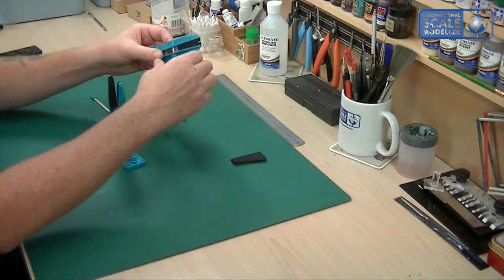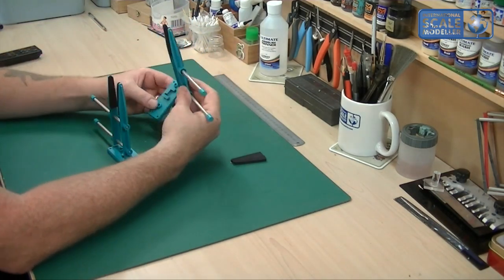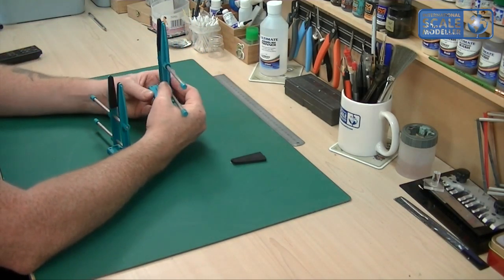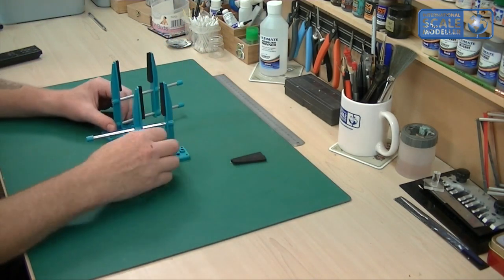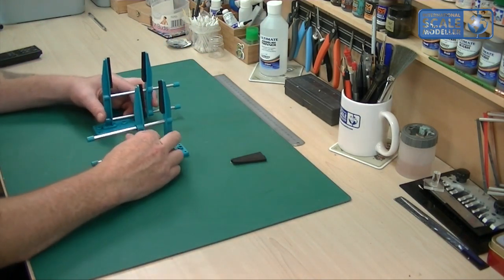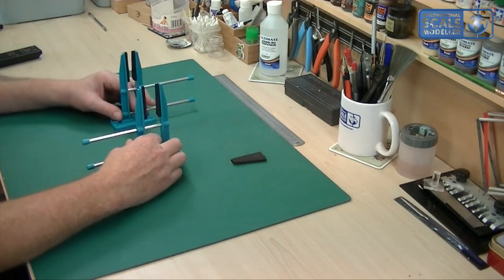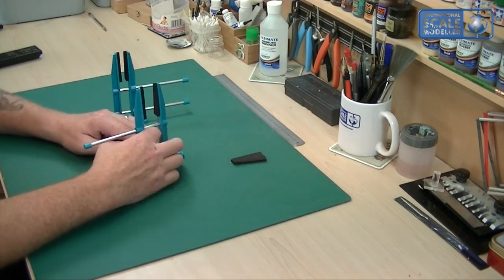So what you can do with this, you can have two or three of them lined up together. I think it shows it on the packet actually. But you can have two or three of them lined up so that so if you're doing figures or maybe a ship or something like that you can have that clamped either that way obviously and the other way as well.